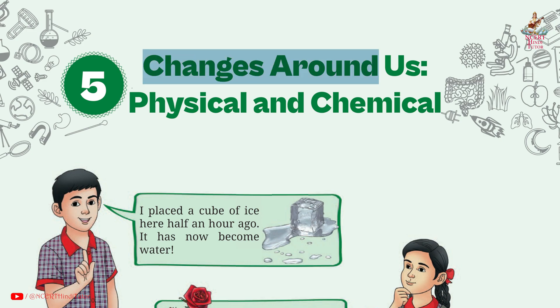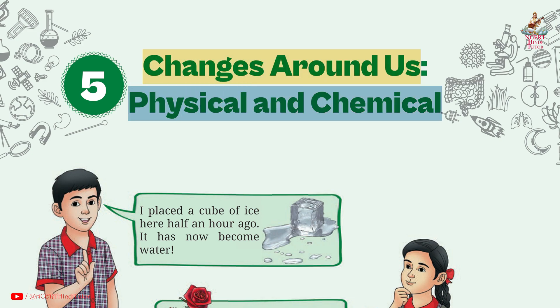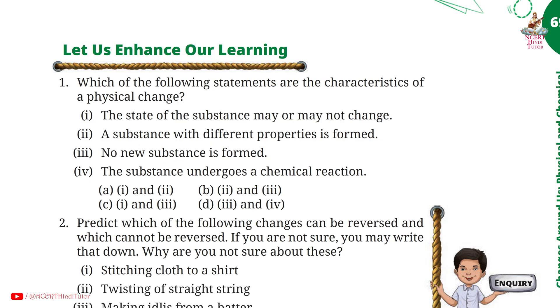Chapter 5: Changes Around Us — Physical and Chemical. Question answers from Grade 7 Science book Curiosity. Let us enhance our learning.